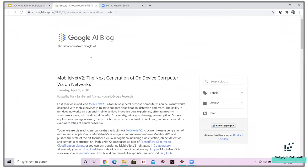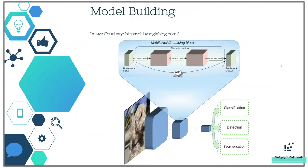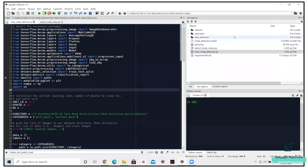MobileNet is a highly efficient architecture that can be applied to embedded devices with limited computational capacity — such as Raspberry Pi, Google Coral, or NVIDIA devices. I have the Google AI Blog opened and will leave the link in the description below for you to understand more about MobileNet. To understand MobileNetV2 architecture, you need to understand the basics of how neural networks work, hidden layers, CNN models, and then MobileNet.